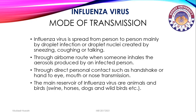Mode of transmission: influenza virus spreads from person to person mainly by droplet infection or droplet nuclei created by sneezing, coughing, or talking. When an infected person sneezes, it can infect another person standing nearby. Transmission also occurs through airborne route when someone inhales aerosols produced by an infected person, and through direct person-to-person contact such as handshakes or hand-to-eye, mouth, or nose transmission. The main reservoir of influenza virus is animals and birds.